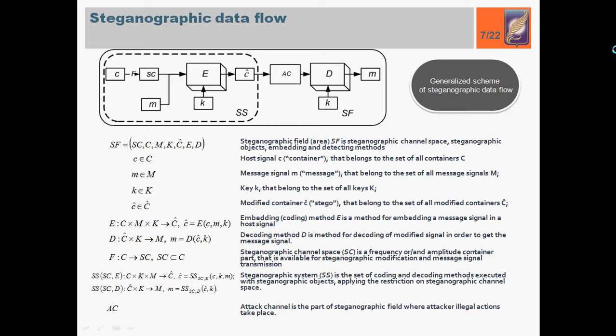Embedding or encoding methods is a method for embedding a message signal in a host signal. The modified signal should satisfy all steganography requirements, like the size of modified signal should be the same as the host signal, stego should be without any perceptional distortion of the host signal. Decoding method is a method for decoding of a modified signal in order to get the message signal. Steganography channel space is a frequency or spatial container part that is available for steganographic modification and message signal transmission. Steganography system is a set of coding and decoding methods executed by the steganographic object, applying the restrictions on steganography channel space. And attack channel is a part of steganography field where attack and illegal act take place.